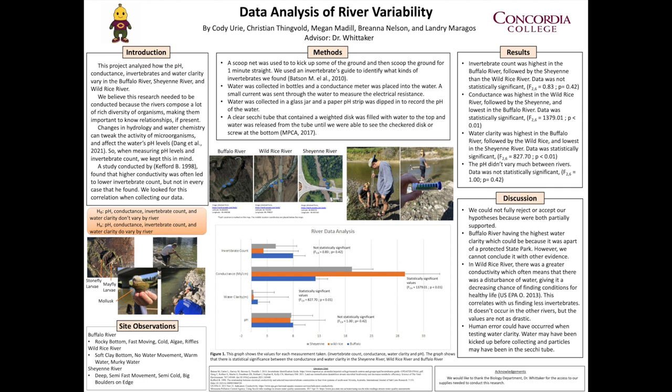A small current was sent through the water to measure the electrical resistance. Water was collected in a glass jar, and a paper pH strip was dipped into the glass to record the pH of the water. A clear Secchi tube that contained a weighted disc was filled with water to the top, and water was released from the tube until we were able to see the checkered disc at the bottom.